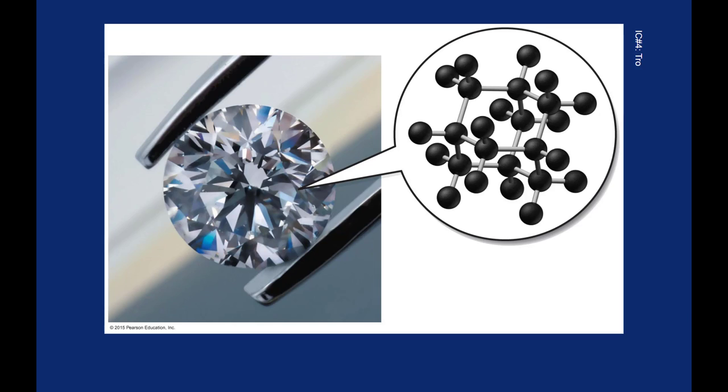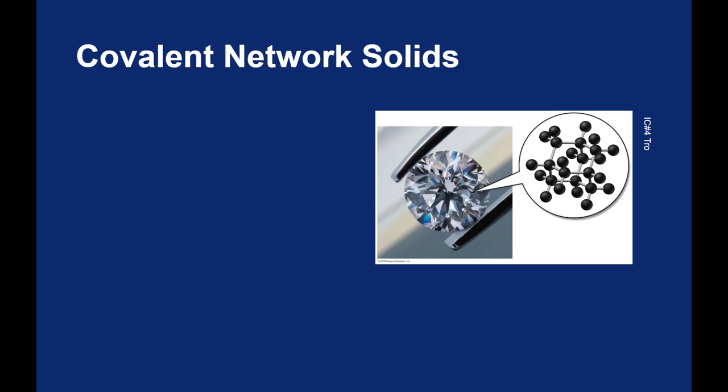The carbon will take an sp3 hybridization and make these tetrahedral shapes, and you get this regular repeating tetrahedral crystal growing on and on. Diamond is an example of a network solid, or more precisely a covalent network solid.